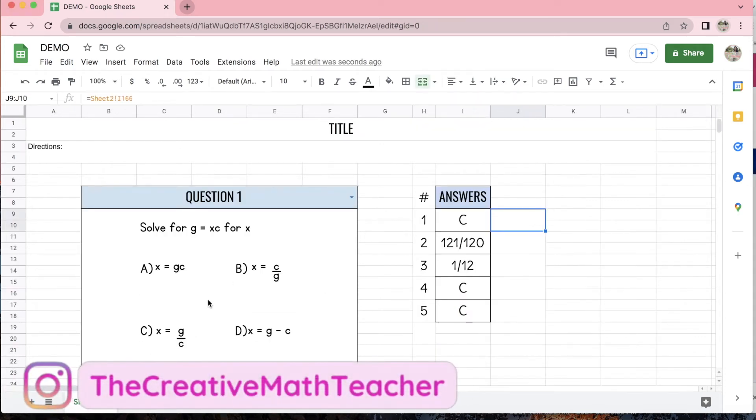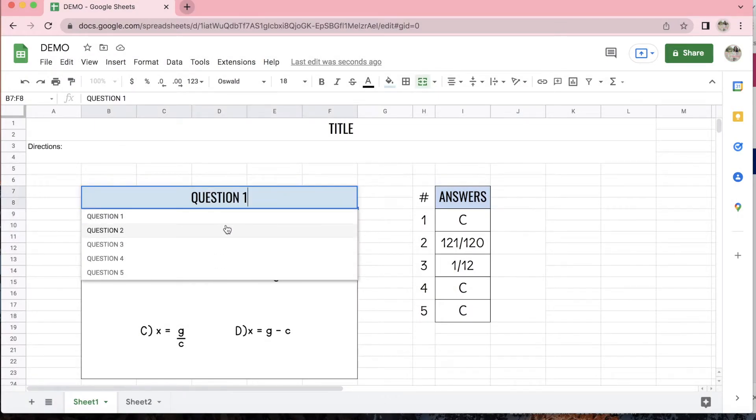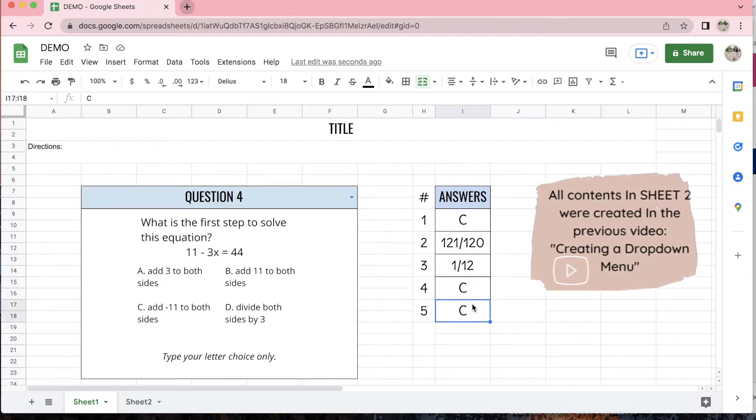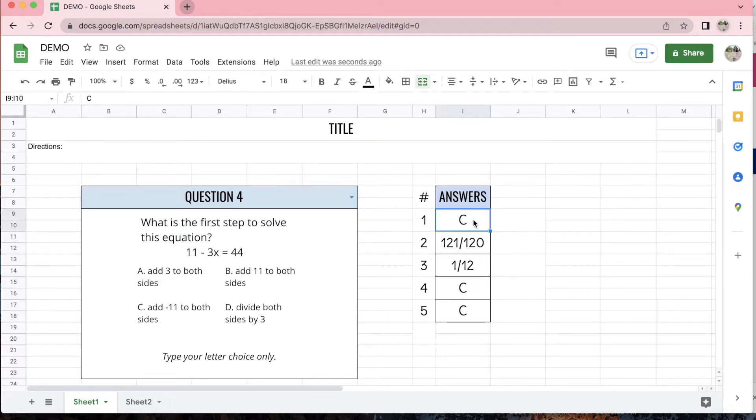Okay, so in the previous video we created our little dropdown menu questions, and this can be used for any subject. In today's video we're going to be seeing how to make these guys turn green if their answers are correct and how to make them turn red if their answers are incorrect. That way our students get immediate feedback and quickly we can look at their screens and see how they're doing.